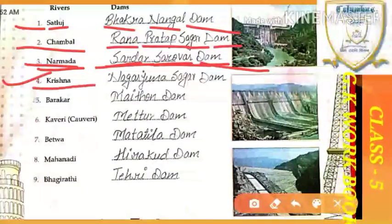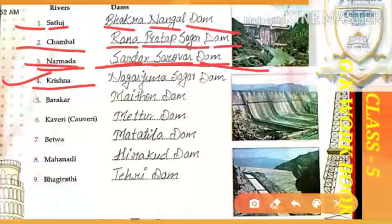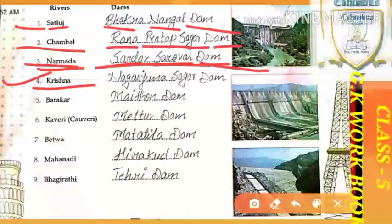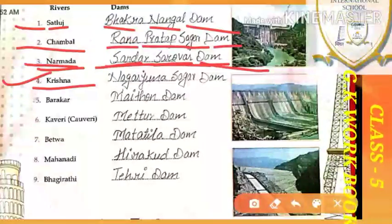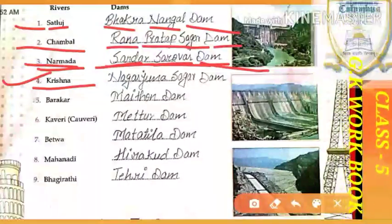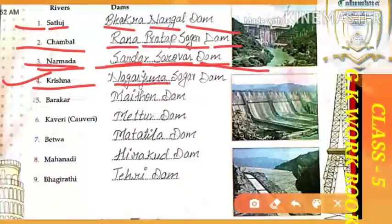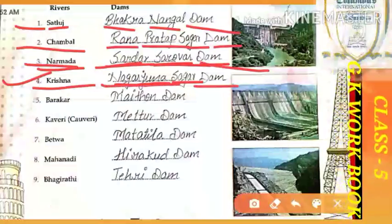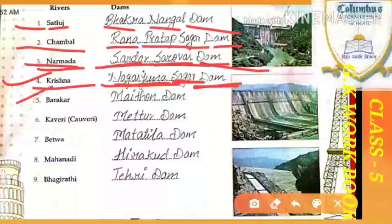Next, you have river Krishna. Which dam is built on this river? The name of the dam built on the Krishna river is Nagarjun Sagar Dam. Nagarjun Sagar Dam.